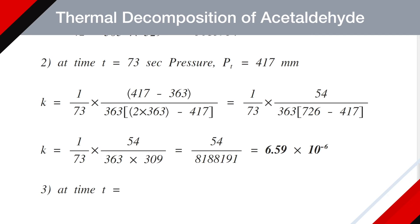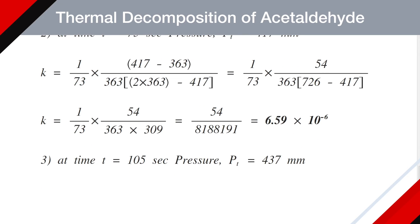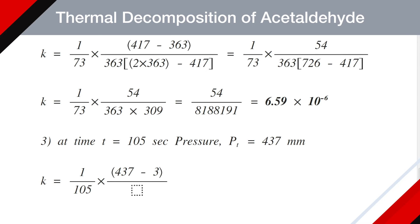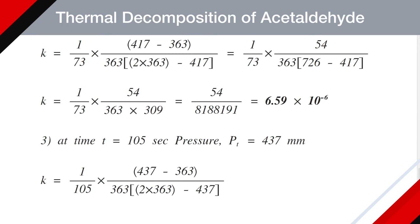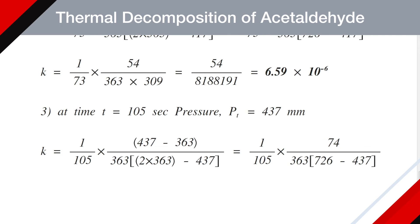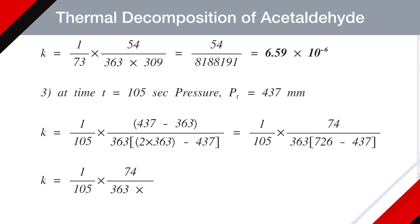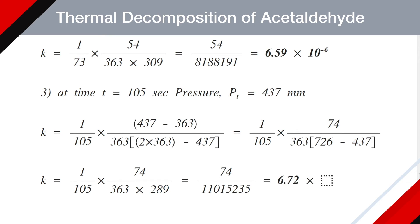At t = 105 s, Pt = 437 mm Hg: K = (1/105) × (437 − 363) / (363 × (2 × 363 − 437)) = (1/105) × 74 / (363 × 289) = 74 / 11,015,235 ≈ 6.72 × 10⁻⁶.